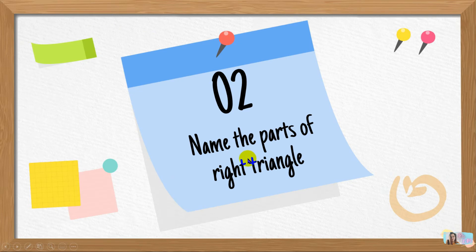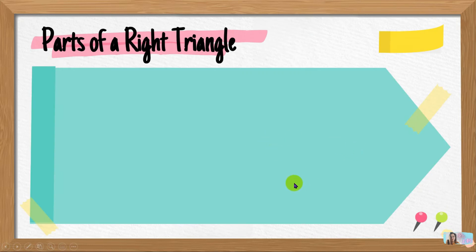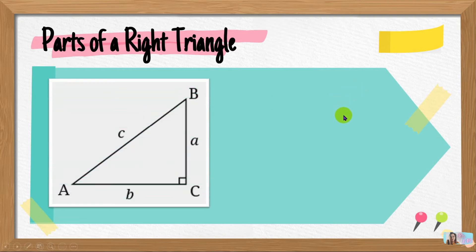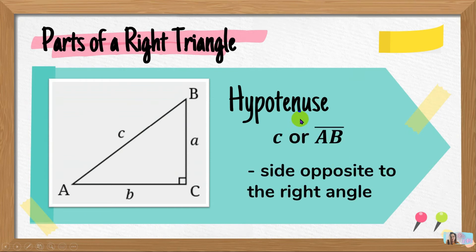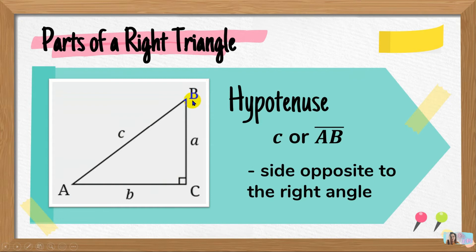Let's now proceed to the parts of a right triangle. We all know that triangles have sides and angles, but in a right triangle, there is a difference in what we call those sides and angles. The first part of the right triangle is the hypotenuse. Hypotenuse is the side opposite to the right angle. So when we find the right angle, the side opposite to it is what we call the hypotenuse. In triangle ABC, angle C is our right angle, and the side opposite to it is side C, or side AB. We call that the hypotenuse.